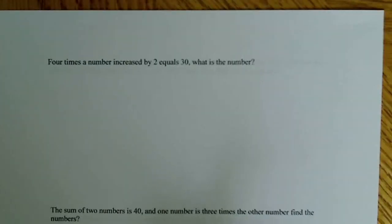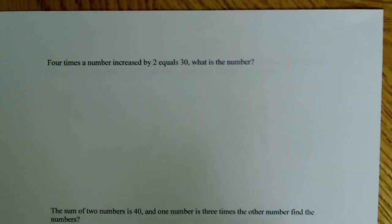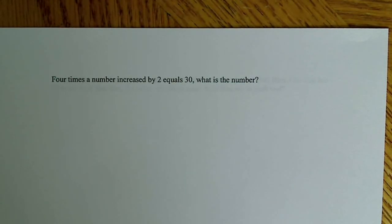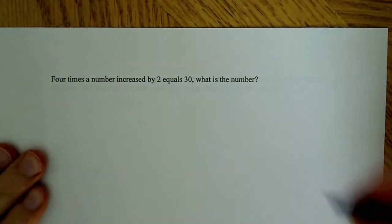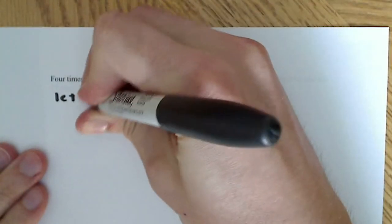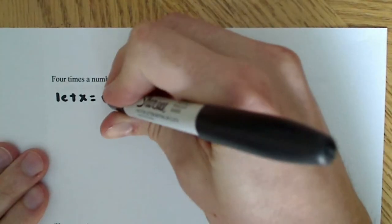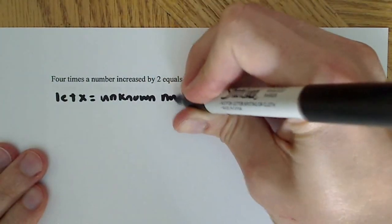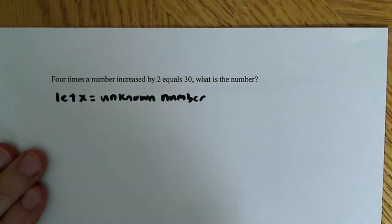So I want to start with just some very basic word problems, and we'll work our way up in complexity. The first one says: 4 times a number increased by 2 equals 30. What is the number? The first thing to do with any problem is to make sure you understand what it's asking for. So we're going to let x equal the unknown number.